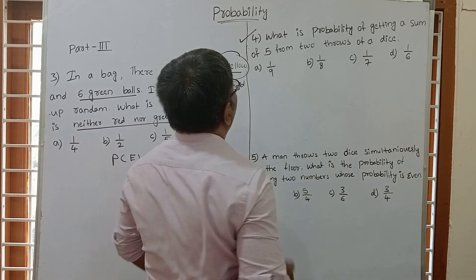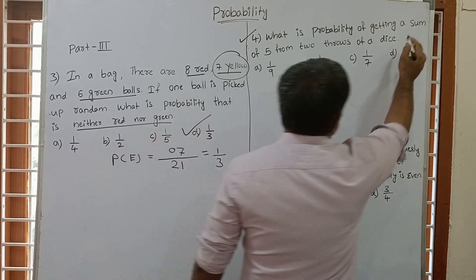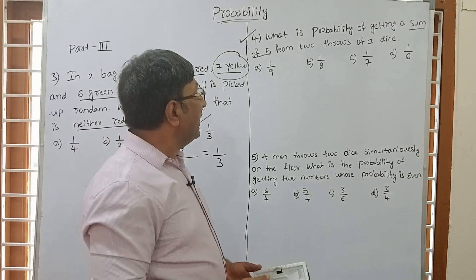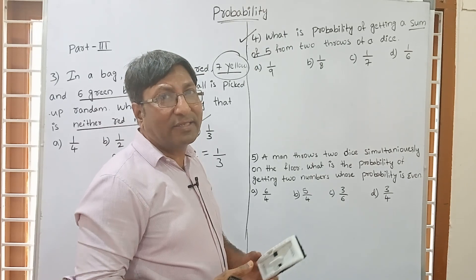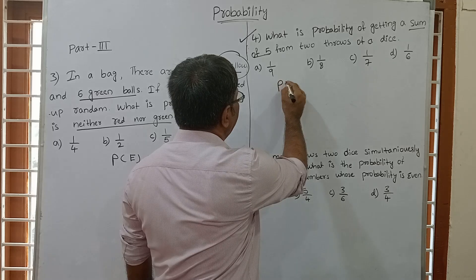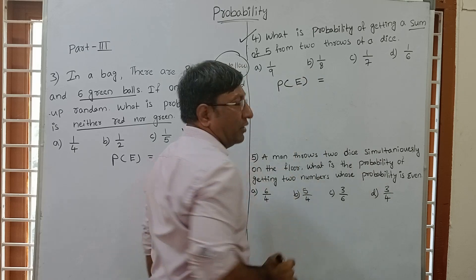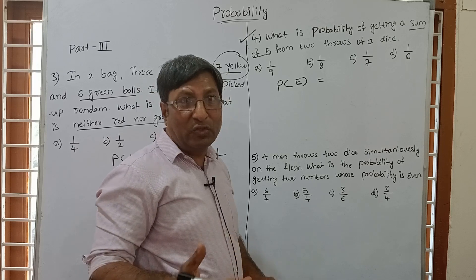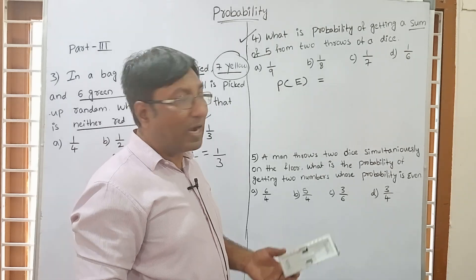Question number 4: what is the probability of getting a sum of 5 from 2 throws of a dice? When 2 dice are thrown, there is a total sample space of 36. Probability of any event equals favourable outcome divided by total outcome. Total outcome is 36 because there are 2 dice.